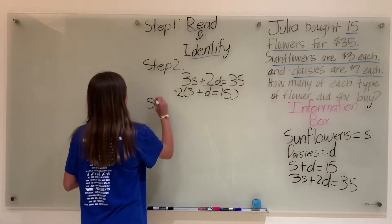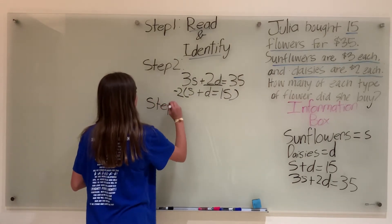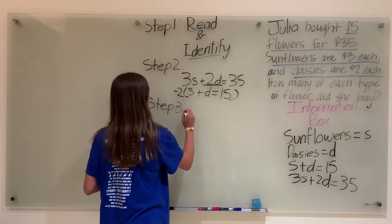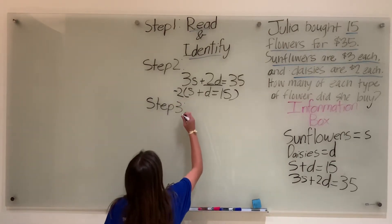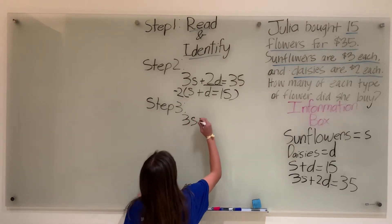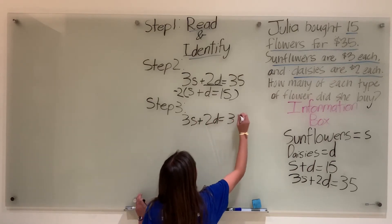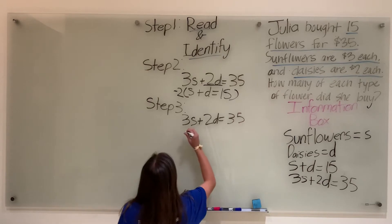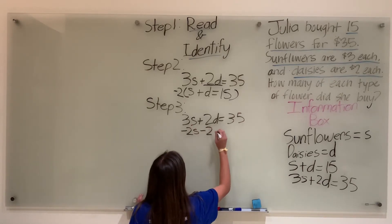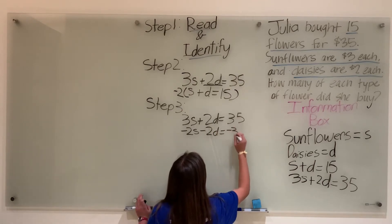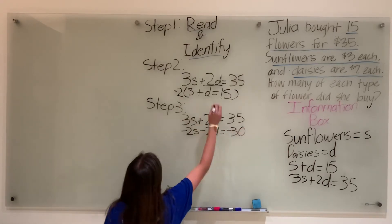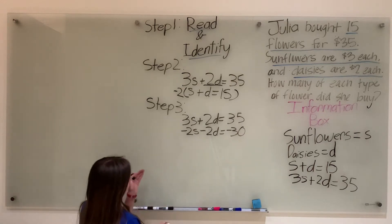On to step 3. Step 3 is to add your equations. 3s plus 2d equals 35, and negative 2s minus 2d equals negative 30. Distributing the whole equation, what we do to one side we have to do to the other side.